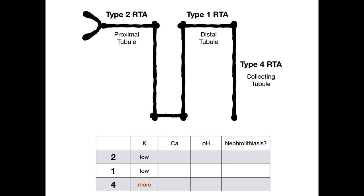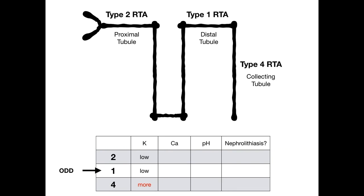Now for the calcium, the pH, and whether or not you're going to see kidney stones, we're going to do this based on the number of the renal tubular acidosis. We've got type 2, type 1, and type 4 — paying special attention to the number itself. Notice that 2 and 4 are even numbers, which means 1 is odd. So 1 is the odd man out for the rest of this chart. Types 2 and 4 will have the same findings, and type 1 will have the abnormal finding for calcium, pH, and nephrolithiasis.